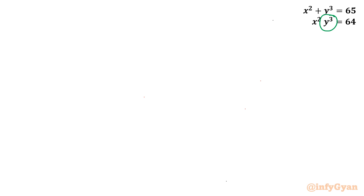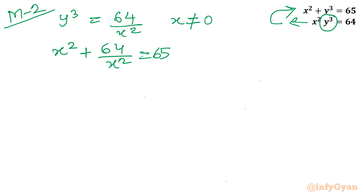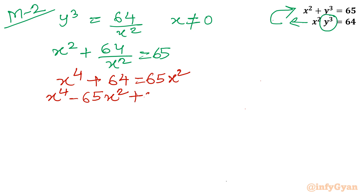Method number 2: I will calculate y cubed from the second equation and frame a quartic equation. From the second equation, y cubed equals 64 over x squared. As already discussed, x cannot be 0. Putting this into equation 1: x squared plus 64 over x squared equals 65. Multiplying both sides by x squared gives x to the power 4 plus 64 equals 65x squared, so x to the power 4 minus 65x squared plus 64 equals 0.